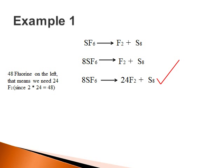Now we see that there are 48 fluoride on the left side and 2 on the right. To balance the fluoride, we multiply F2 by 24, to give 48 fluoride on the right side. Now the equation is fully balanced.